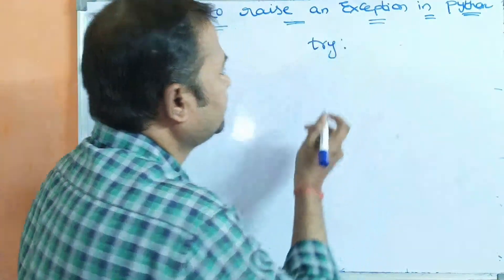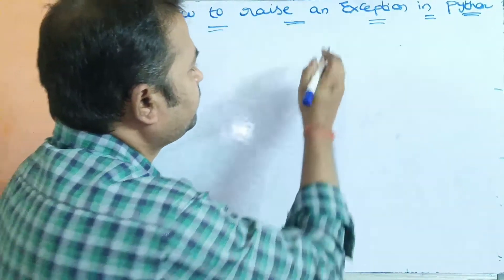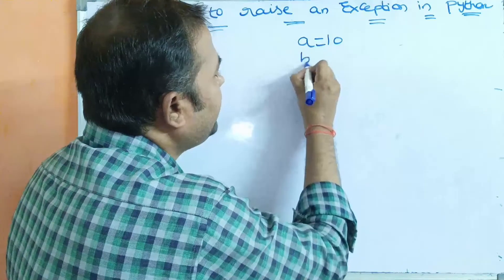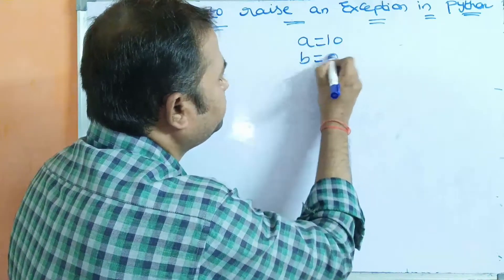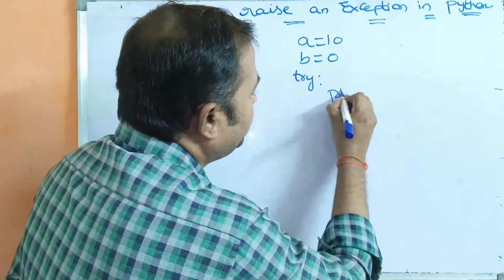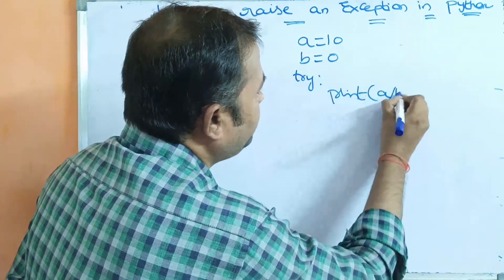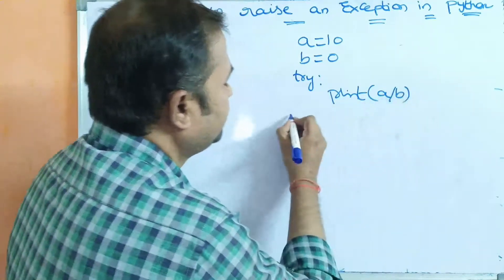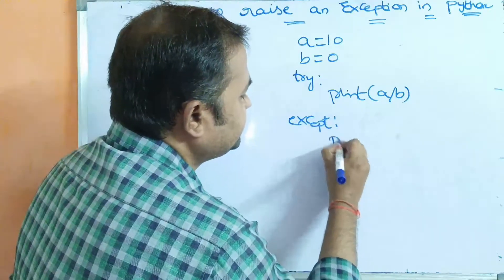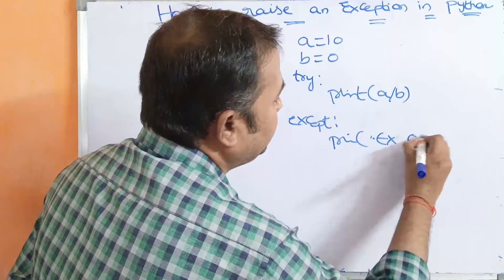Here we have a try block. Let a value be 10 and b value be 0. Within the try block, the statement is print of a divided by b. The except block contains the statement: print 'exception occurred'.